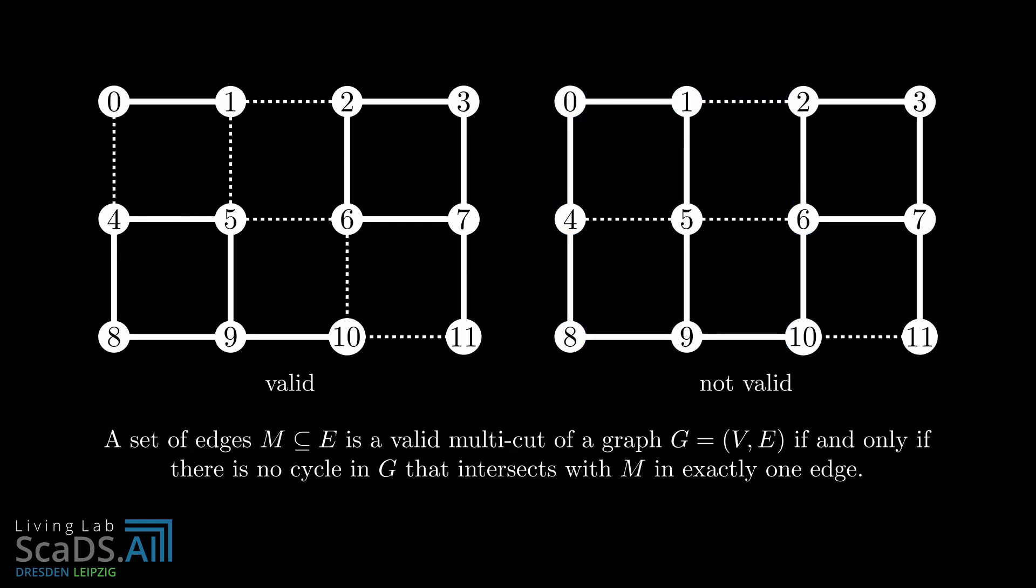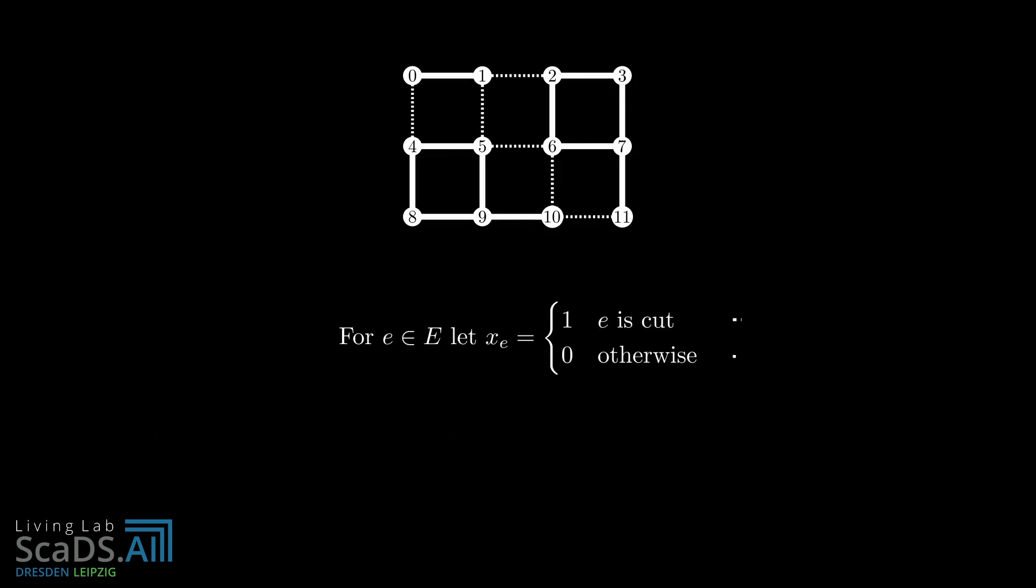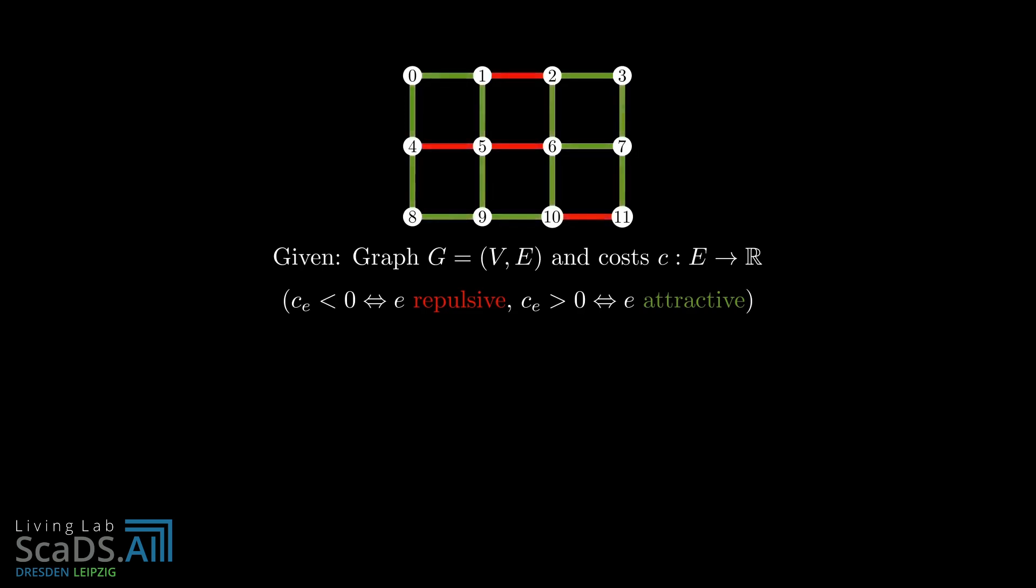With this characterization of multi-cuts, we can formulate the multi-cut problem which consists in finding an optimal multi-cut. For every edge e, we define a variable xe that is 1 if the edge is cut and 0 if not. Suppose we are given a graph G and a cost function c that assigns a real valued cost to each edge in the graph. A negative cost means that the edge is repulsive and wants to be cut. A positive cost means that the edge is attractive and doesn't want to be cut. The objective of the multi-cut problem consists in finding a multi-cut such that the cost of the edges that are cut is minimal.